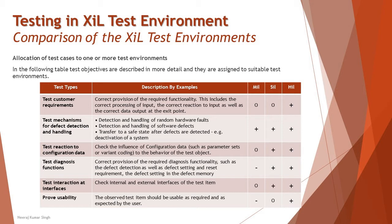The next area is testing reaction to configuration data, which means checking the influence of configuration data — such as parameter sets or variant coding — on the behavior of the test object. This is generally recommended in the SIL and HIL combination. When it comes to MIL it is possible, but configuration data testing is more recommended to be addressed during SIL and HIL environments.